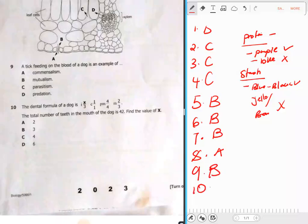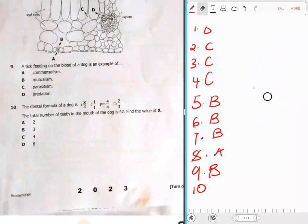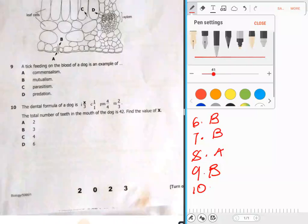Question 10: The dental formula of a dog is incisors X over 3, canine 1 over 1, premolars 4 over 4, and molars 2 over 3. The total number of teeth in the mouth of the dog is 42. Find the value of X. I'll just erase this part so that we can do the calculations together properly.